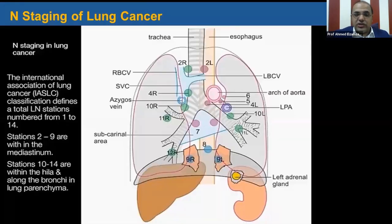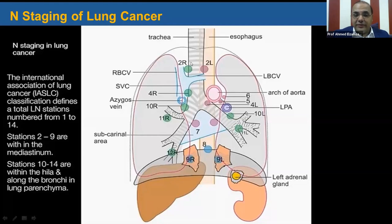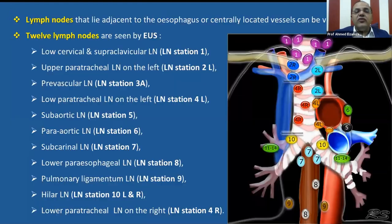Regarding lymph node stations, according to the Yazli classification — the International Association of Lung Cancer Classification — a total of lymph node stations are numbered from 1 to 14. Stations 1 are in the root of the neck, stations 2 to 9 are within the mediastinum, stations 10 to 14 are within the hilum and along the bronchi in the lung parenchyma. Lymph nodes lying adjacent to the esophagus and/or centrally located vessels can be visualized by EOS, and 12 lymph node stations are seen by EOS.